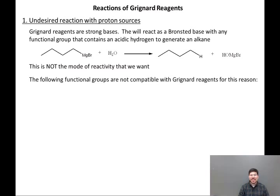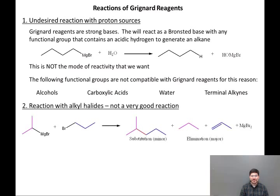This is not the mode of reactivity we want. As a result, the following functional groups are not compatible with Grignard reagents: alcohols, carboxylic acids, water (including anywhere in the reaction mixture as an impurity in the solvent or reagents or as a component of your molecular structure), and terminal alkynes, which can have their acidic hydrogen removed by strong base. So if Grignard reagents are a carbon nucleophile, we're going to look at reactions with the three classes of carbon electrophiles we have introduced so far.